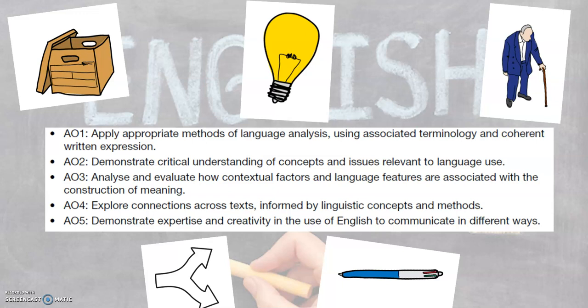AO4, represented by the forked arrow, is where we look at comparing texts and identifying the connections and links between them. And finally AO5, represented by a pen, is about your creativity — your ability to deploy the language that you've been studying in your own writing. That's demonstrated in both an exam context, where you have to do writing in an exam situation, but also as part of your NEA where you get to do that original writing piece, selecting your own genre and purpose.